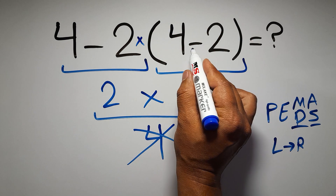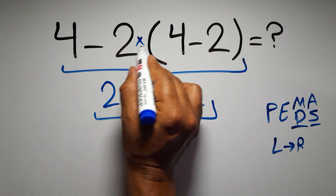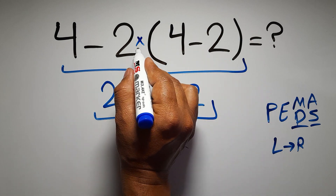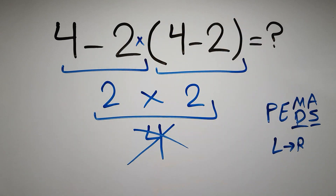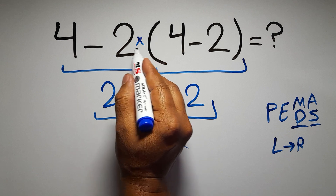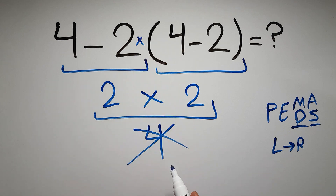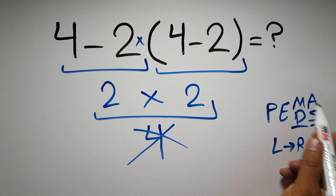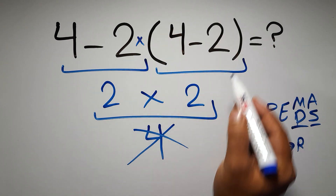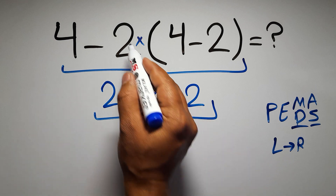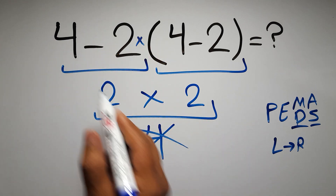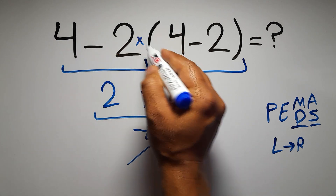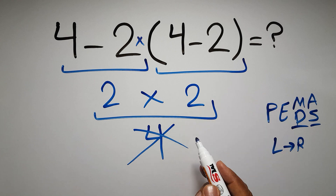Inside this parentheses we have one subtraction. Here we have a multiplication because in mathematics when a number is placed next to parentheses it means multiplication, and we usually don't write the multiplication sign for brevity. So according to PEMDAS, first we have to do this parentheses, then this multiplication, and finally this subtraction. If we do this subtraction before this multiplication or this parentheses, it is wrong.